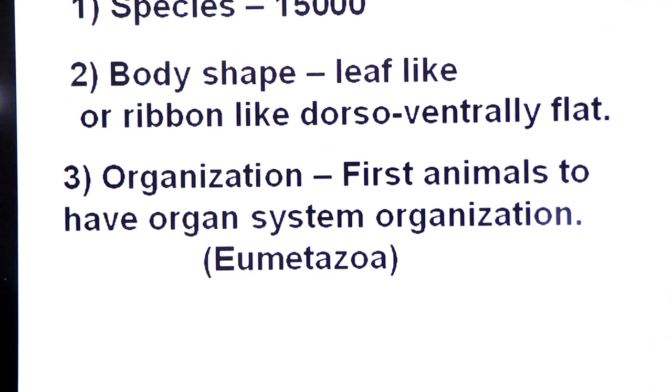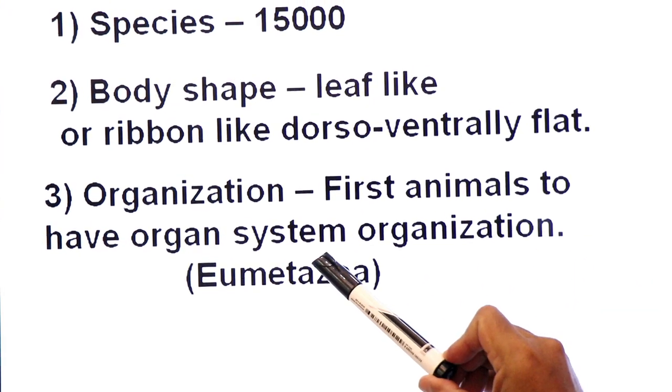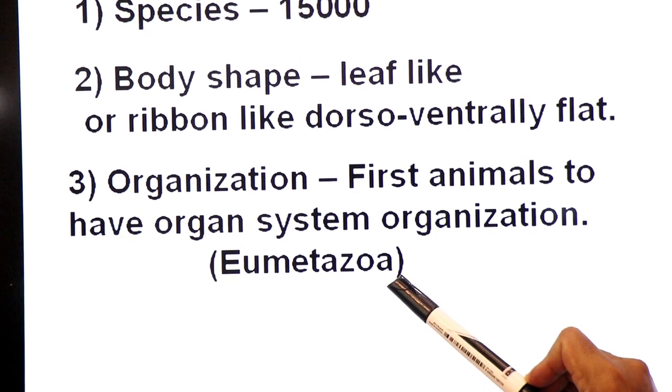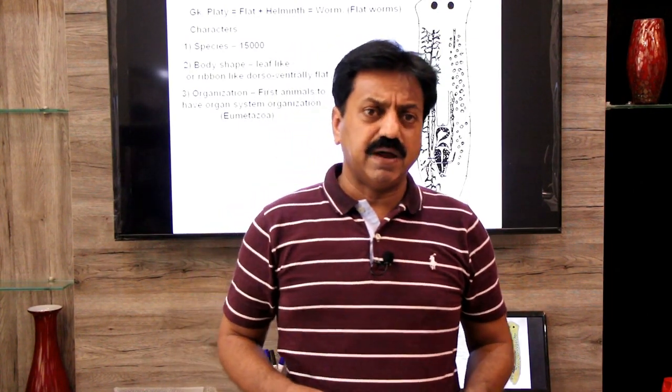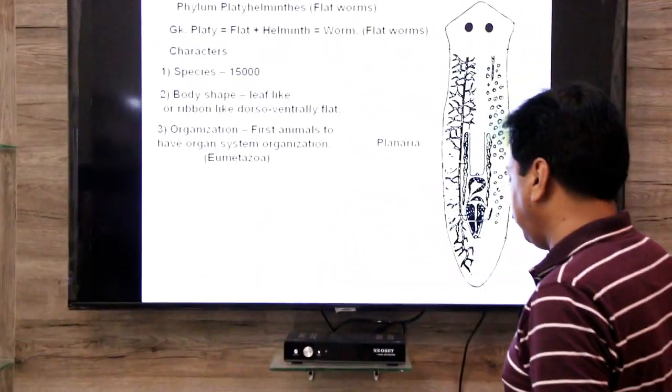Character number 3: organization. These are the first animals to have organ system organization and belong to the group Eumetazoa. Previously we studied phylum Porifera, which has cellular organization and belongs to Parazoa. Then phylum Cnidaria, which has tissue organization and belongs to Eumetazoa. Now this phylum has organ system organization; they also belong to Eumetazoa.